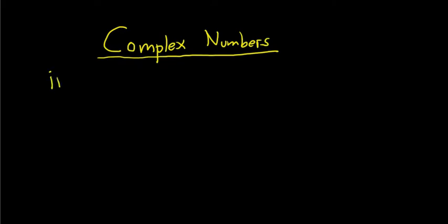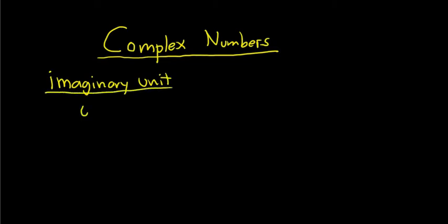First, there's something called the imaginary unit. The imaginary unit is i — that's the symbol we use, i for imaginary — and it's equal to the square root of negative 1. So where does this come from?